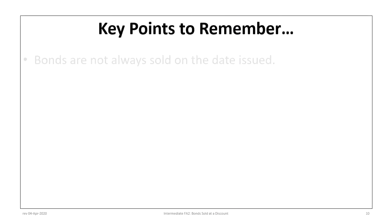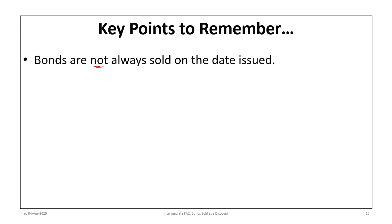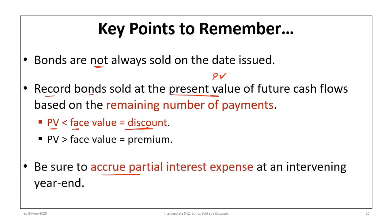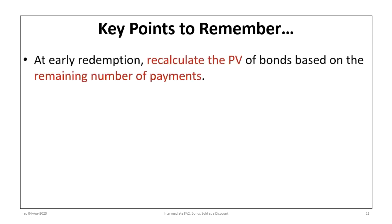Key points to remember: bonds are not always sold on the date they are issued — in this example the bonds were sold a year after issuance. Record bonds at the present value of future cash flows based on the remaining number of payments. If the present value is less than face value, you have a discount; if greater, a premium. Be sure to accrue partial interest expense at an intervening year end — here, two months elapsed after September 30th, so 2/6 months was recorded.